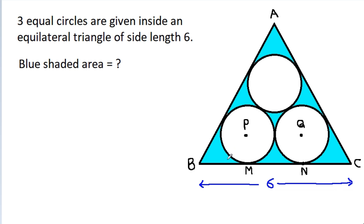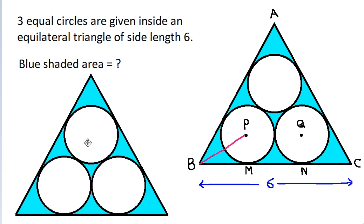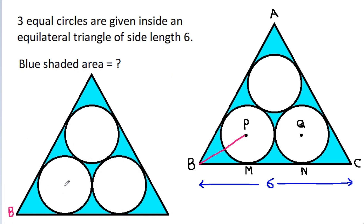If we join B, then we have point B, point P, and point M. PM will be equal to PX, that is the radius, and BX will be equal to BM, and BP is common.